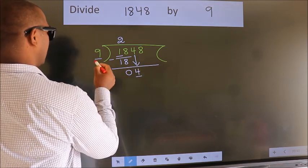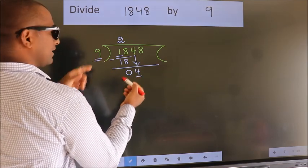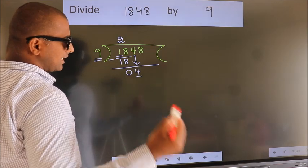Here we have 4, here 9. 4 is smaller than 9, so we should bring down the second number.